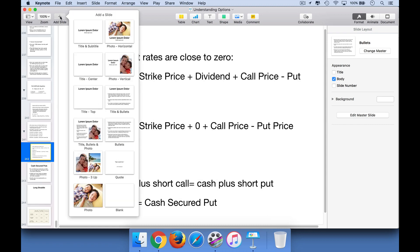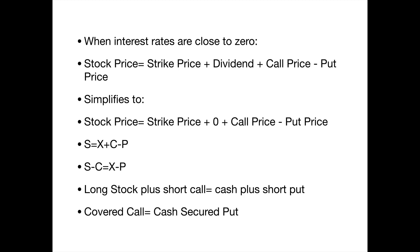Now I want to give you a shortcut for when your stock does have a dividend yield. Assuming interest rates are close to zero and your stock does pay a dividend — and in most cases these options are going to be American options exercisable before expiration, though the underlying formula assumes European options — the numbers will be a little off, but it's still a nice ballpark formula. When interest rates are close to zero and the stock is paying a dividend, put-call parity looks like: the stock price equals the strike price plus the call price minus the put price. When the dividend equals zero, it simplifies to S equals X plus C minus P.